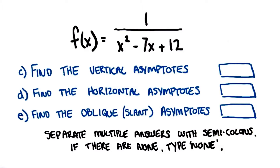Remember that slant and oblique are referring to the same type of asymptote. They may be used interchangeably.